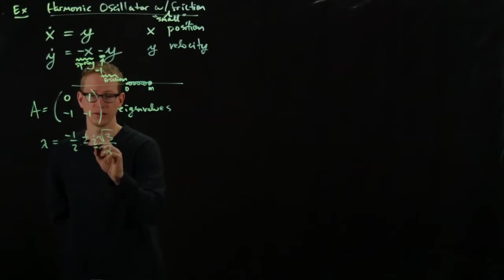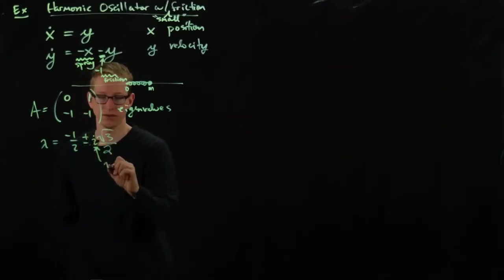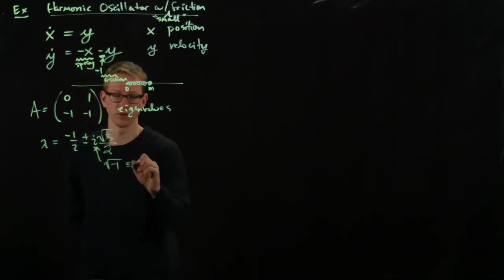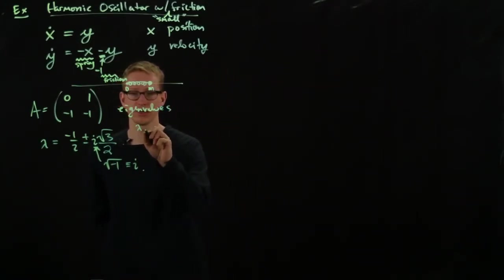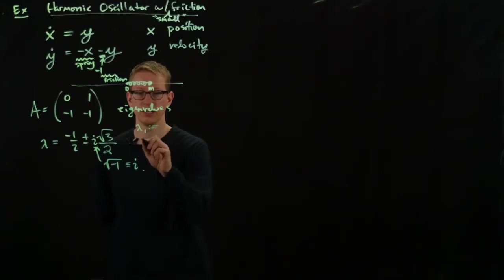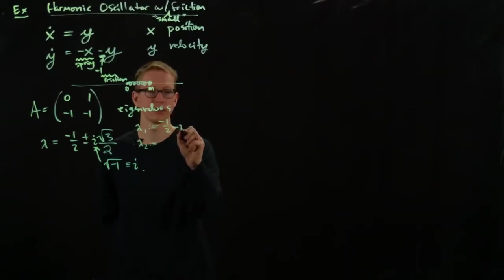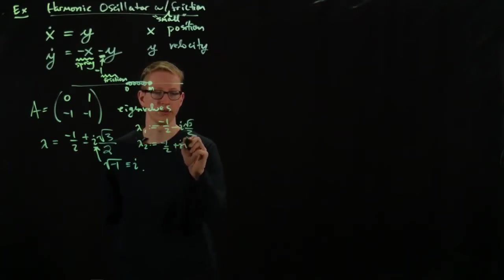So i here is the square root of negative 1. So we're going to have two eigenvalues and these eigenvalues I'll use shorthand notation. Lambda 1 is going to be the smaller of these two and lambda 2 is going to be the larger. So this is negative 1 half minus i root 3 over 2. And this is minus 1 half plus i root 3 over 2.